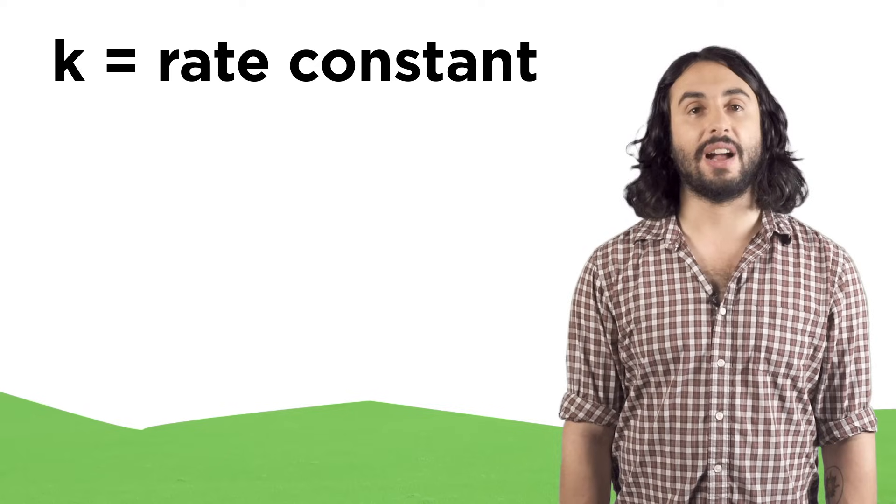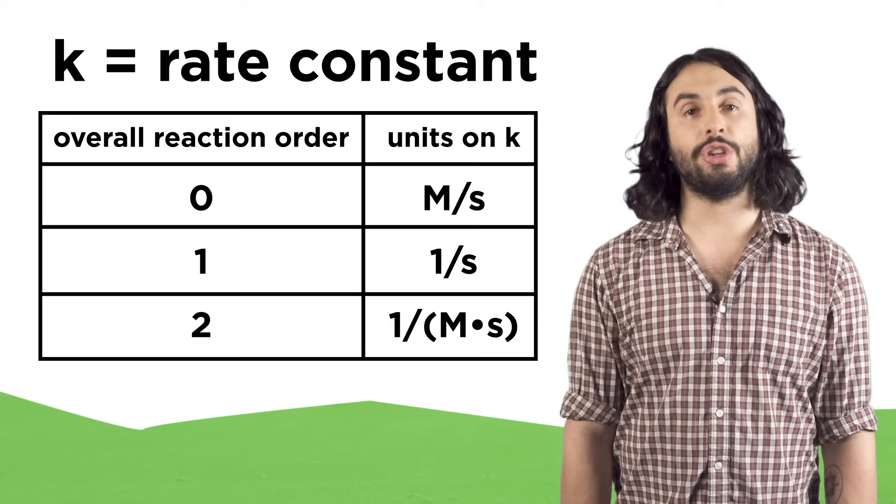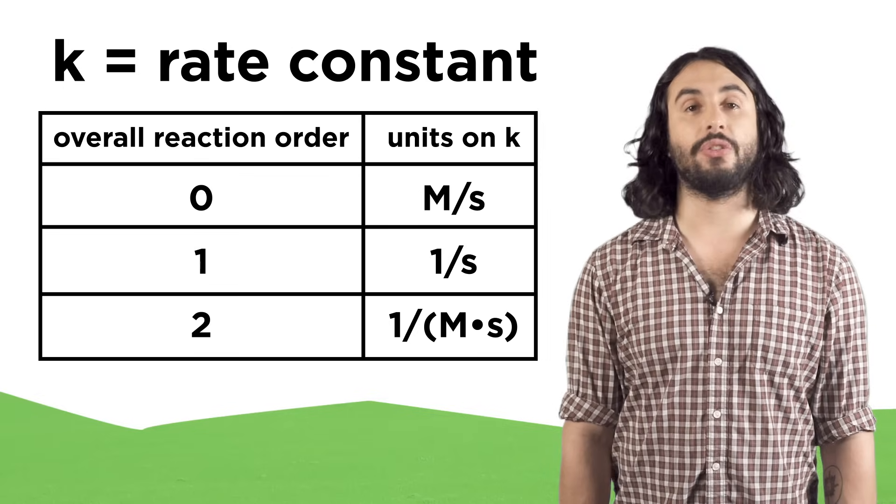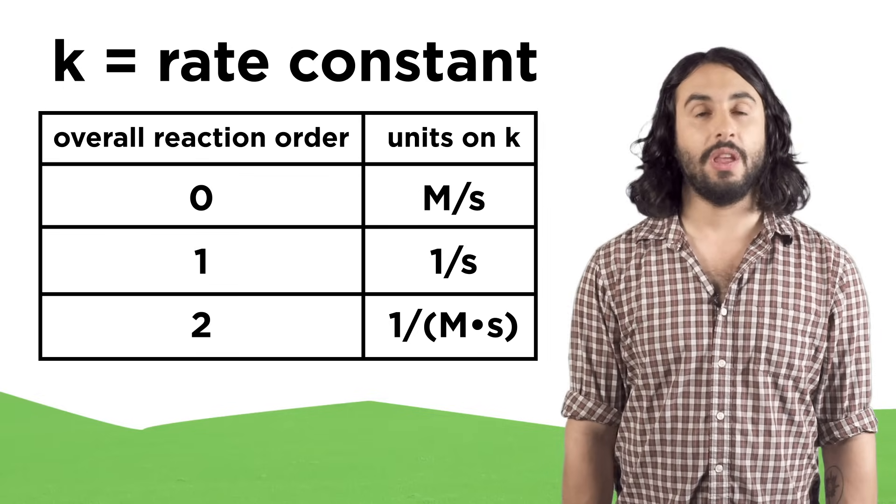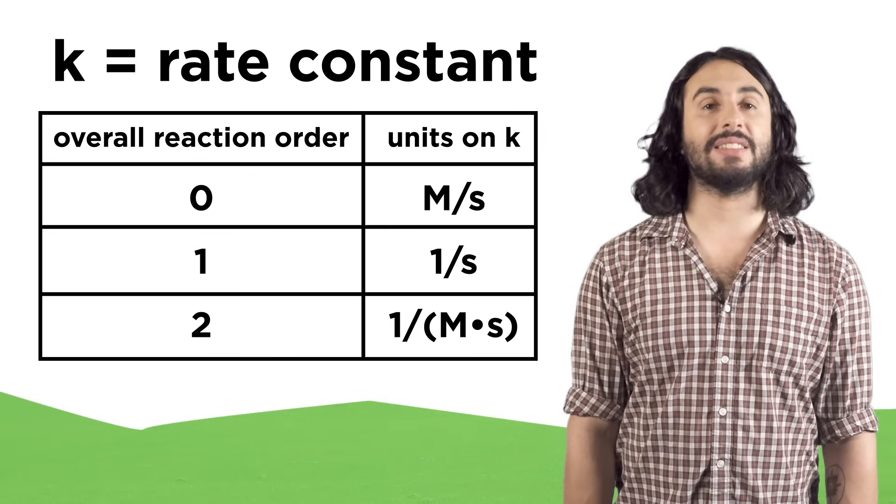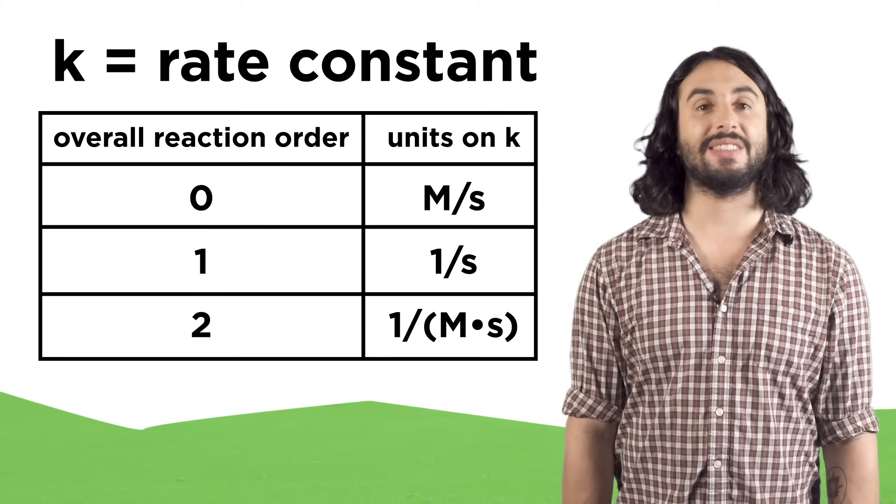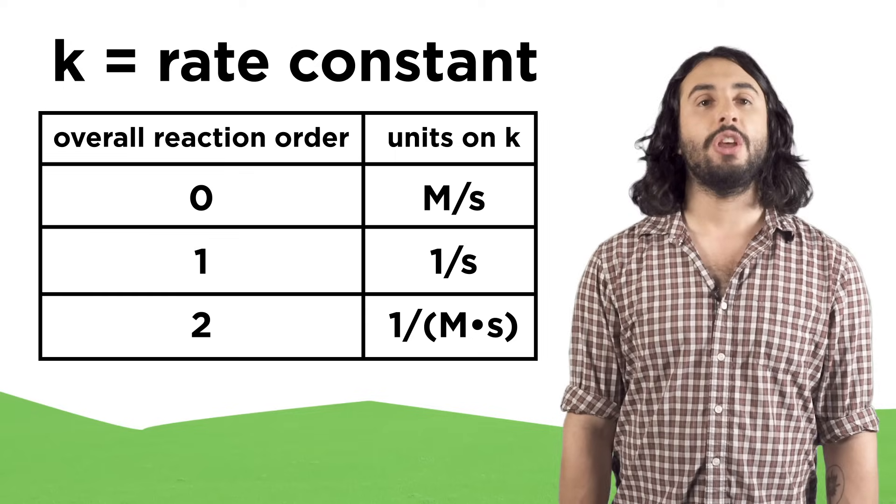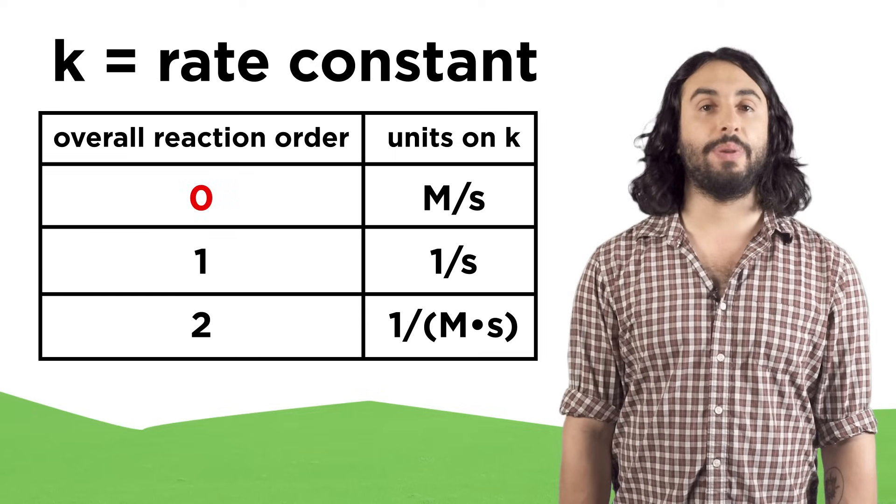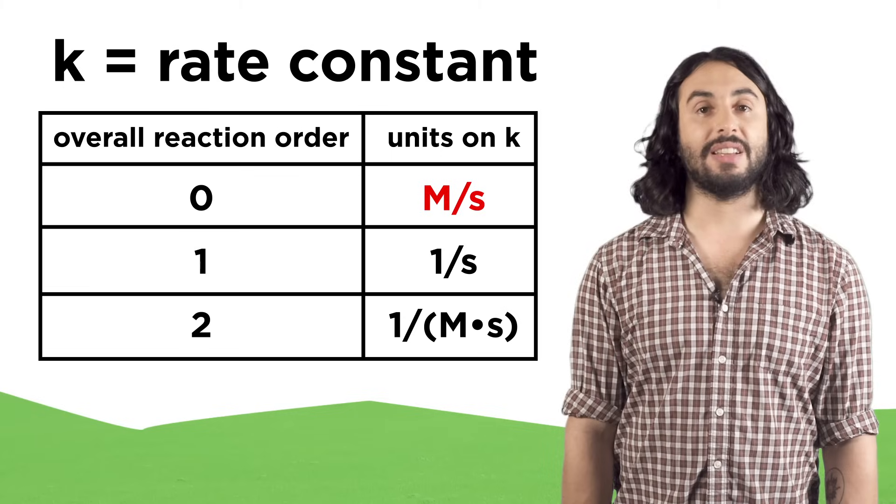While we're discussing the rate constant, we should understand that the units on it will be specific to the overall reaction order. This is because they must cancel out the concentration units to give molarity per second, which are units that make sense for the rate. So for zero order they will be molarity per second since a zero order reaction doesn't depend on concentration.